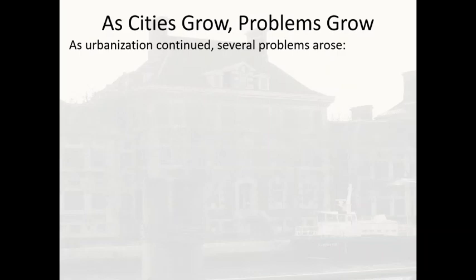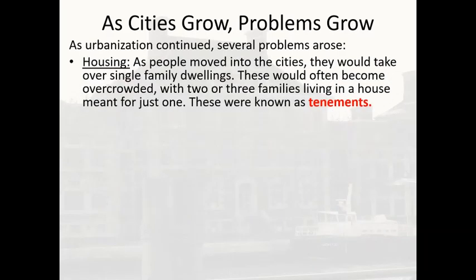As cities grew, problems also grew. One problem was housing. As people moved into the cities, they would take over single-family dwellings that became overcrowded with two or three — even four or five — families living in a house meant for just one. These were known as tenements.